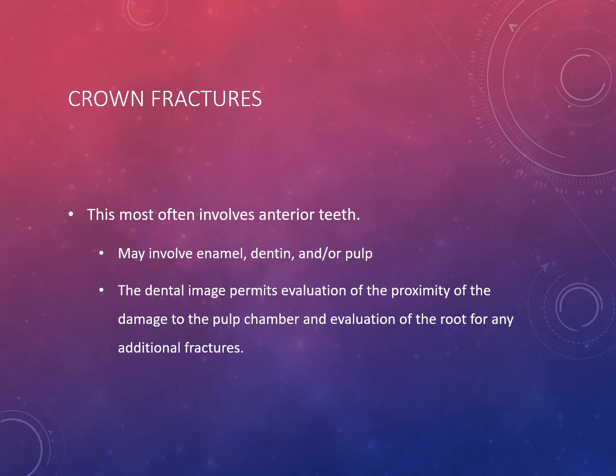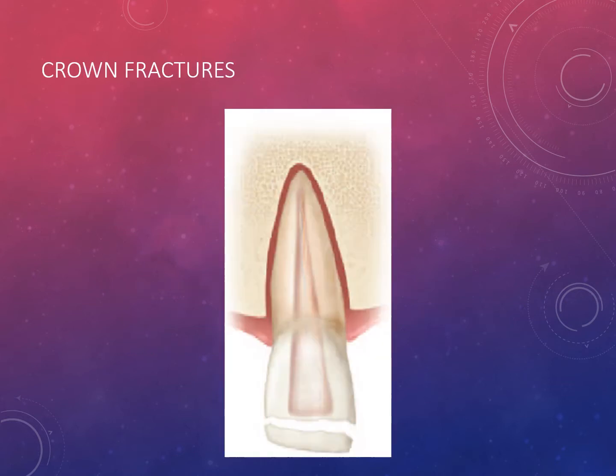Most crown fractures result from an accident involving a fall or motor vehicle. Crown fractures are the most common type of fracture and typically happen on anterior teeth. On a radiograph, a crown fracture can appear involving just the dentin or can extend all the way down to the pulp.